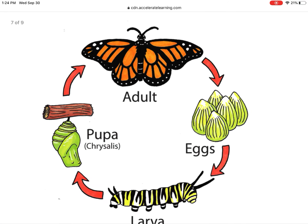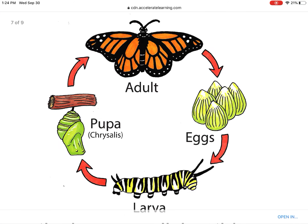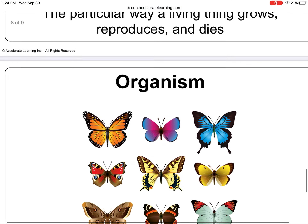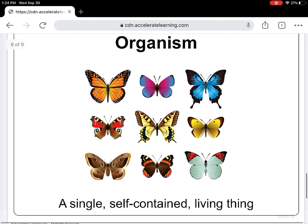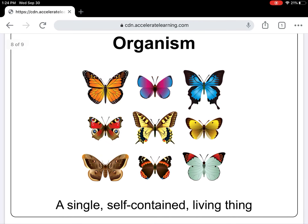This is an example of a life cycle of a butterfly. Your next word is organism. An organism is a single self-contained living thing. For example, a goat is an example of an organism.